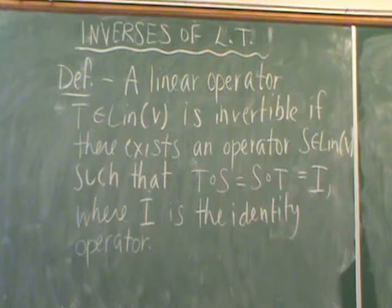we get the identity operator. By the identity operator or the identity transformation, I just mean the linear transformation where V gets mapped to V. So each element just gets mapped to itself.